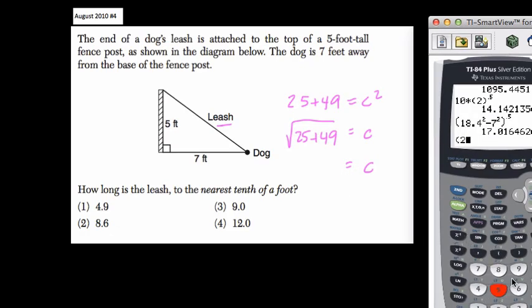Parentheses, 25 plus 49, close parentheses, and square root is the same thing as the half power. That's the way I like to enter in the calculator, and we have our answer.